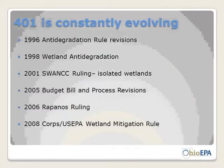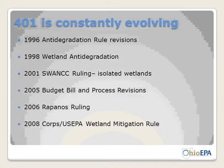What's new and what's next: the 2008 Corps/US EPA wetland mitigation rule prompted us to change our mitigation preference — we used to prefer on-site mitigation first, now it's last; mitigation banks used to be last, now they're first. This makes us consistent with the Corps of Engineers and consistent between our isolated wetland and 401 programs. We've had ongoing stream and wetland rule work groups and have been in discussions with the agricultural community regarding ditch maintenance and cumulative impacts.